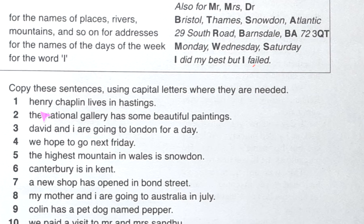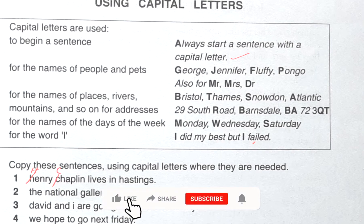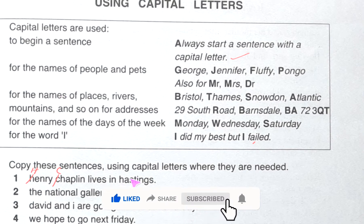Here, see: 'henry chaplain lives in hastings.' The words 'Henry Chaplain' — we understand this is a person's name, so according to the rules, you have to make it capital: Henry, and Chaplain. Another rule applies here — for the names of places — so 'Hastings' is a place's name and we should make it capital.